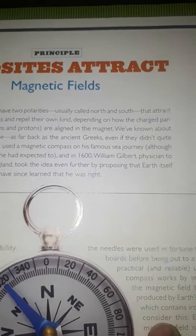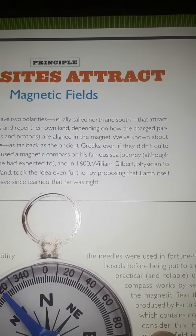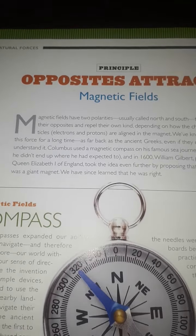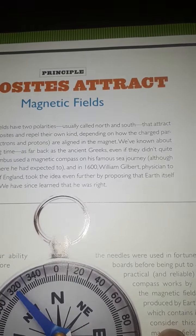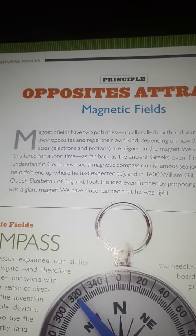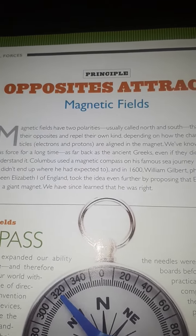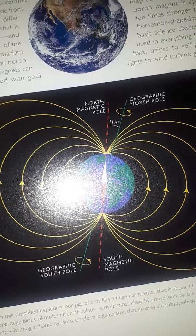Depending on how the charged particles — electrons and protons — are aligned in the magnet, we know about this force. We've known about it for a long time, as far back as the ancient Greeks. Both poles attract or repel depending on the alignment of electrons and protons.